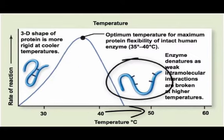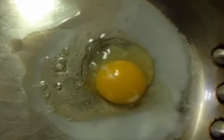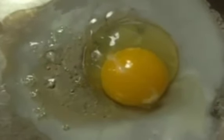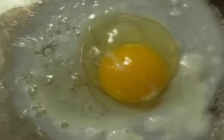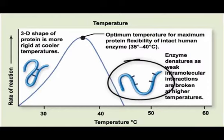One example is when heat is applied to egg whites. The temperature causes a configuration change that alters the protein, changing it from runny and clear to stiff and white. When this happens to human enzyme proteins, they can permanently lose their function.